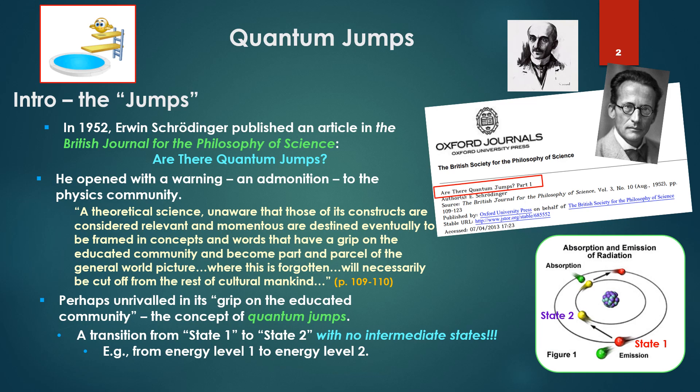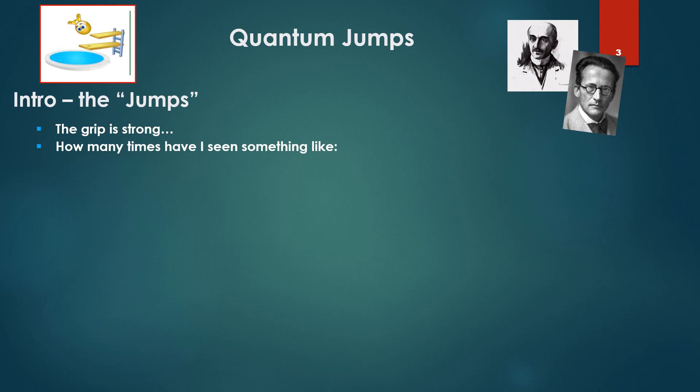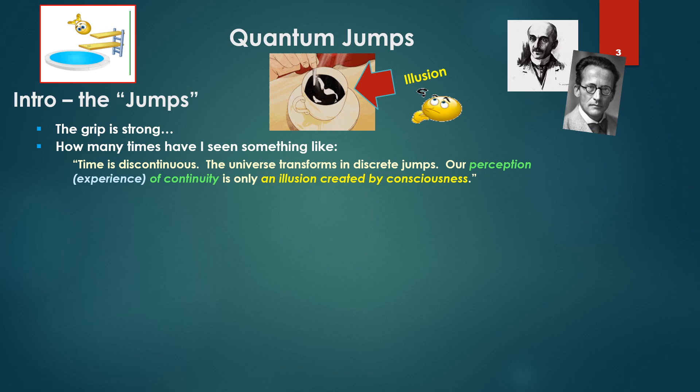Example from energy level one to energy level two. The grip is strong. How many times have I seen something like: Time is discontinuous. The universe transforms in discrete jumps. Our perception of continuity, stirring coffee, is only an illusion created by consciousness.